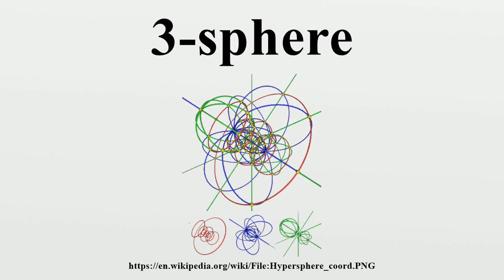Just as an ordinary sphere is a two-dimensional surface that forms the boundary of a ball in three dimensions, a three-sphere is an object with three dimensions that forms the boundary of a ball in four dimensions. A three-sphere is an example of a three-manifold.